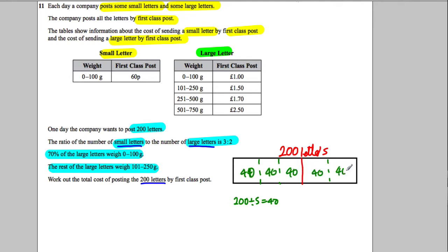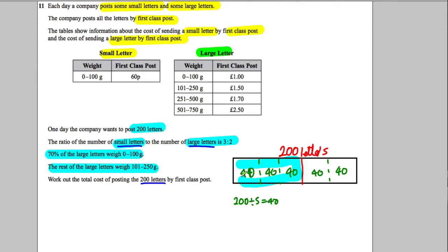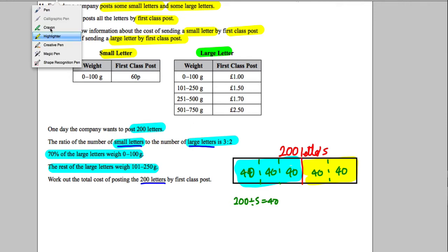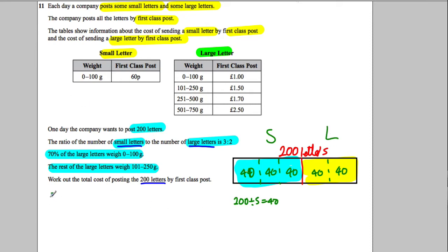So we have 40 in each box: three parts for small letters and two parts for large letters. Therefore, small letters equals 120 and large letters equals 80.